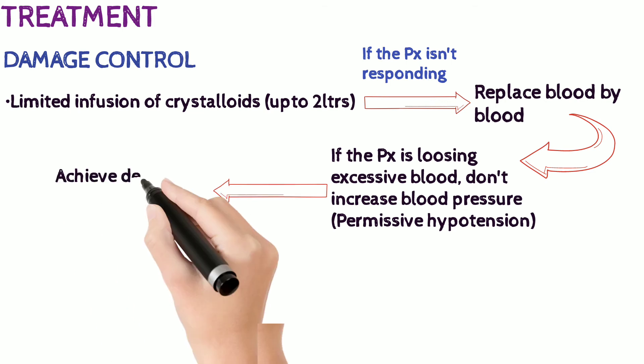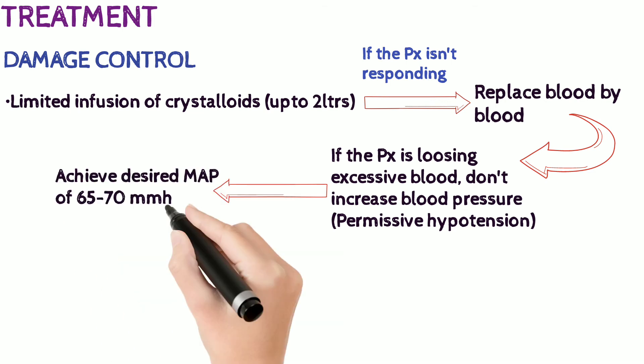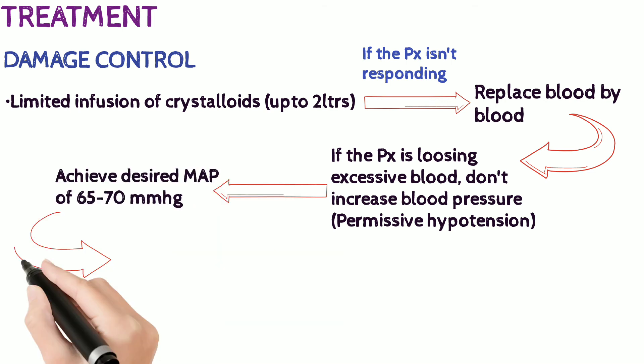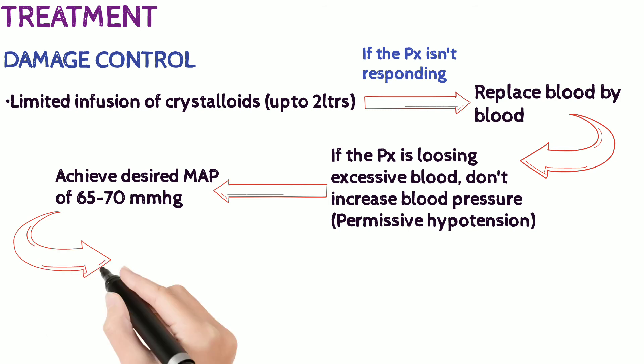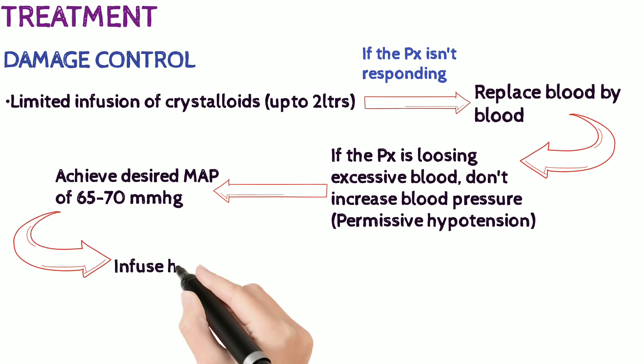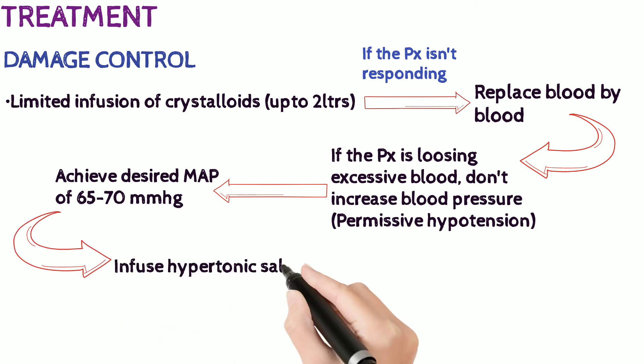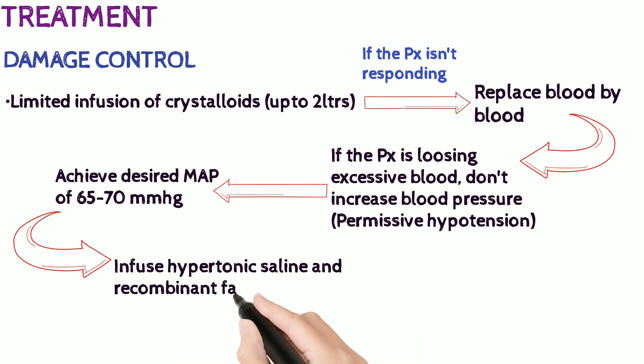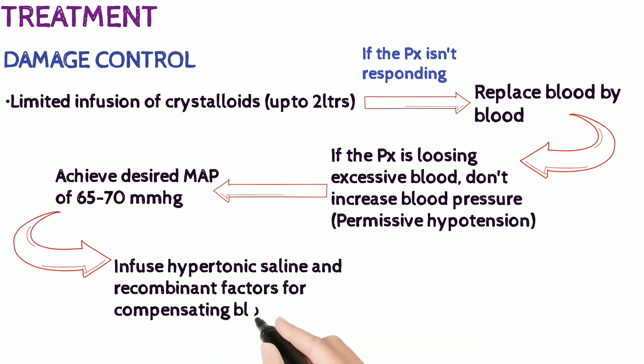We try reaching a mean arterial pressure of 65 to 70 millimeters of mercury, and then infuse hypertonic saline and recombinant factors.